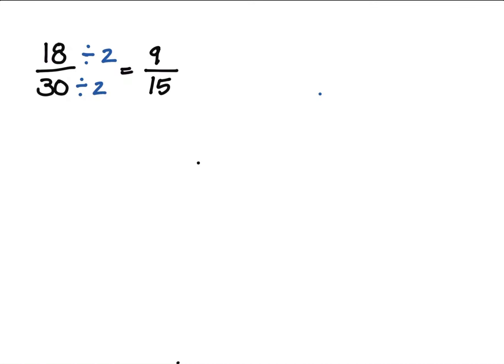These still have something in common: 9 and 15. We know that there's an odd number that can go into both of these, and that odd number would be 3.